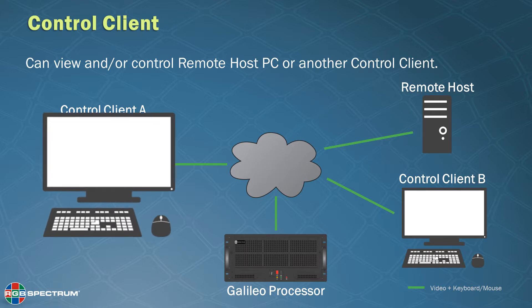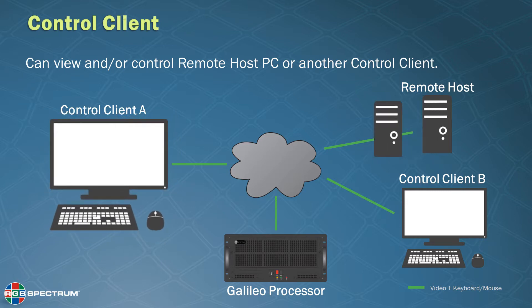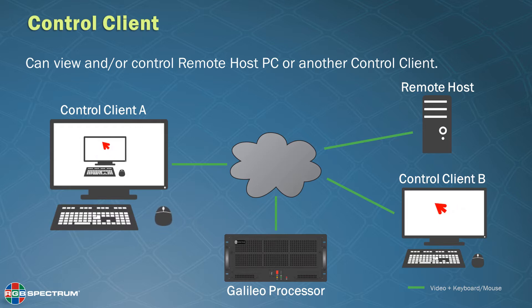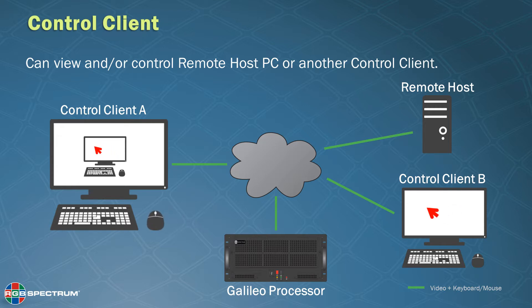Control client A can view a remote host shown on their local screen, and if desired, they can control the remote host with their own mouse and keyboard. Or they can also view and or control another client's computer. In this case, control client A is using their mouse and keyboard to control control client B's PC. Galileo offers easy IP KVM control right from the local display.